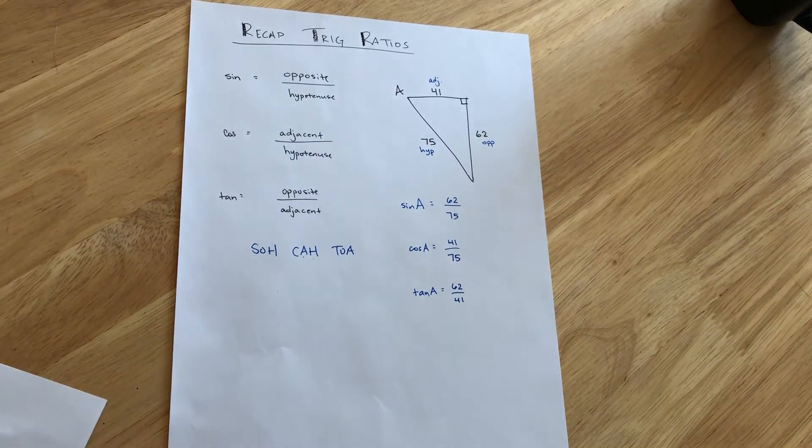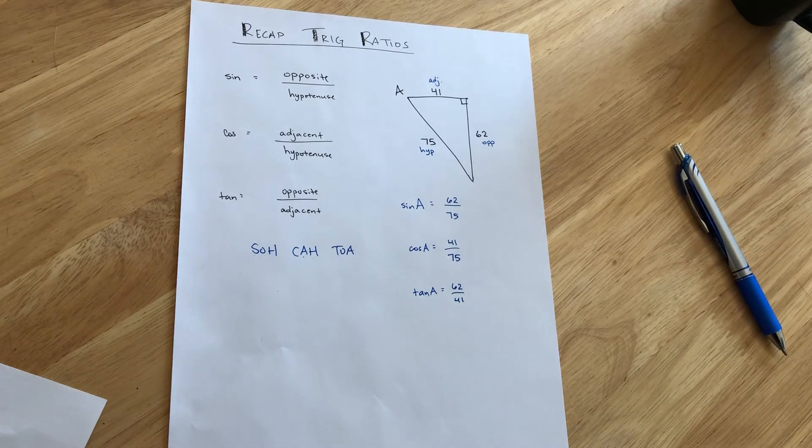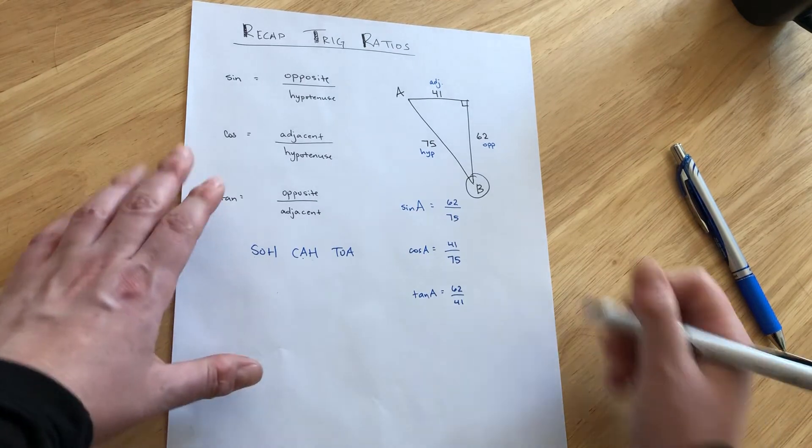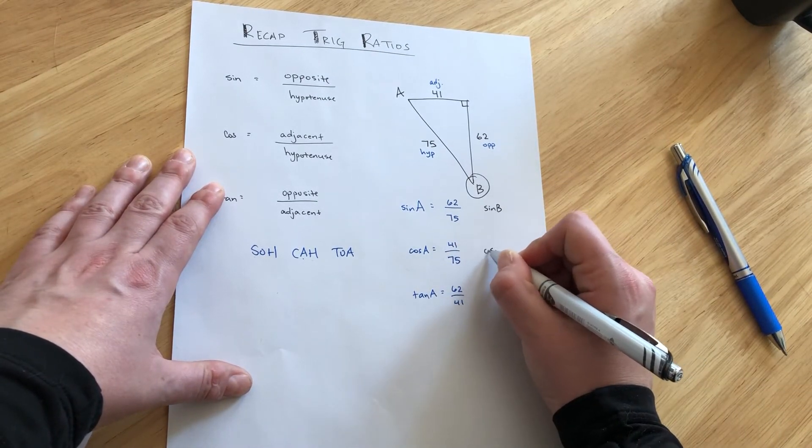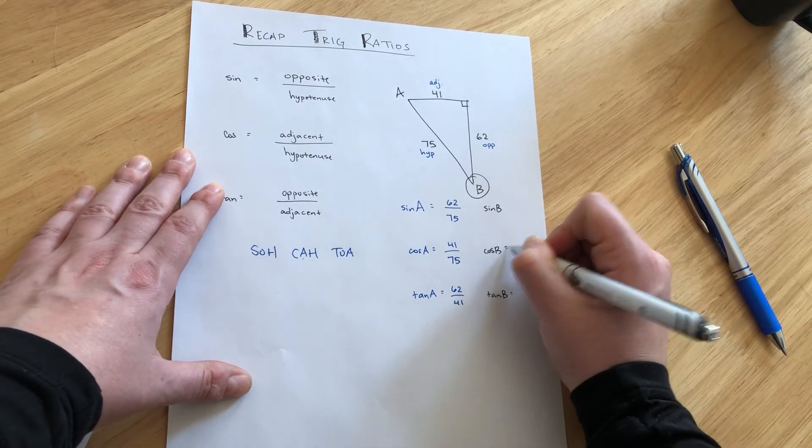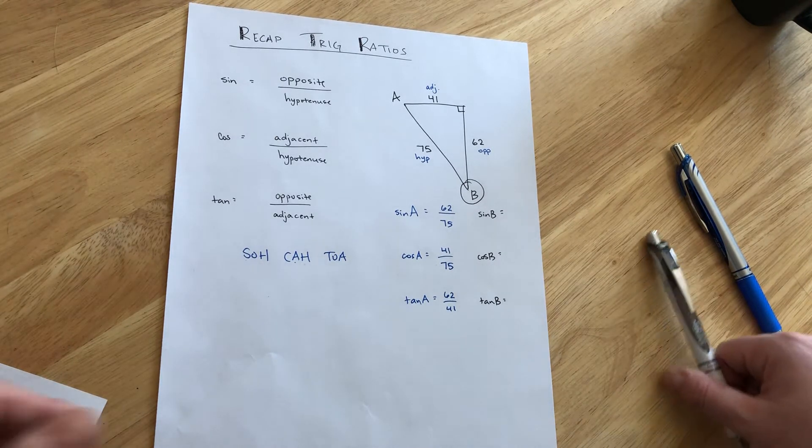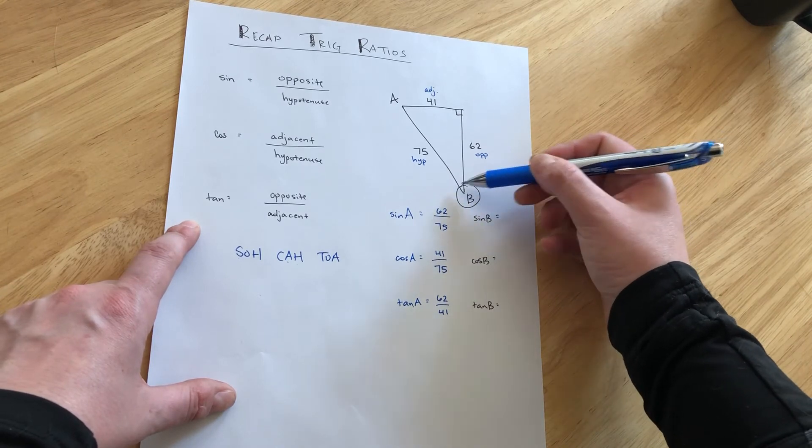And those are the three trig ratios for angle A. But what happens if they suddenly switch and decide to work on the other angle, and they ask us to write out sine of angle B and cosine of angle B and tangent of angle B? What happens then? Well, the names of the sides have to change because if we switch perspective and we're looking at angle B now...